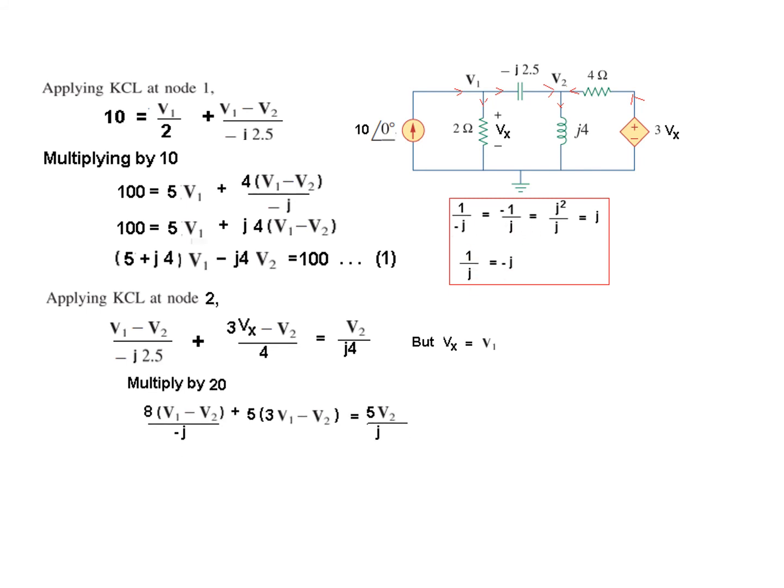Now we'll again eliminate the j's, bring them to the top so by following the same rule minus 1 over j we'll write j and plus 1 over j will write minus j so here we have written plus j and in this case we have written minus j and now we'll simplify taking the like terms together, open like terms, so this is our equation number 2.